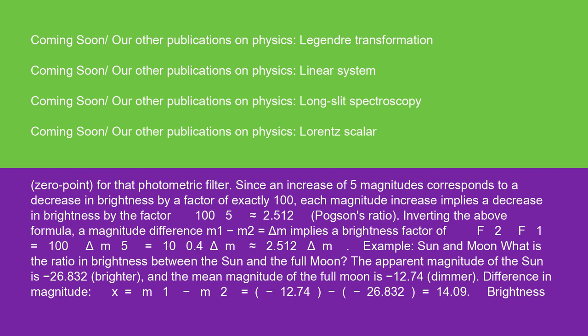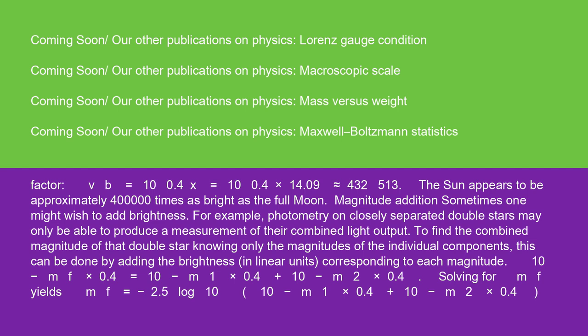Example: Sun and Moon. What is the ratio in brightness between the sun and the full moon? The apparent magnitude of the sun is -26.832 (brighter), and the mean magnitude of the full moon is -12.74 (dimmer). Difference in magnitude: x = m₁ - m₂ = -12.74 - (-26.832) = 14.09. Brightness factor: Vb = 10^(0.4x) = 10^(0.4 × 14.09) ≈ 432,513. The sun appears to be approximately 400,000 times as bright as the full moon.